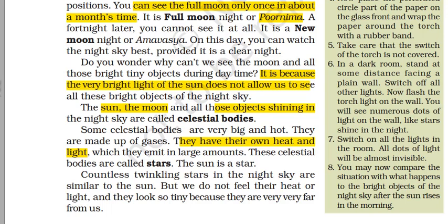Now the sun, the moon, and all those objects shining in the sky are known as celestial bodies. The celestial bodies are very big and hot. They are made up of gases. They have their own heat and light which they emit in large amounts. These celestial bodies are known as stars. The prime example of a star is the sun.